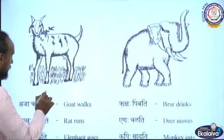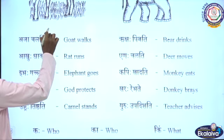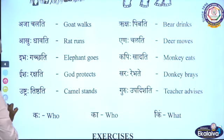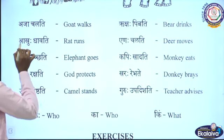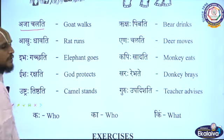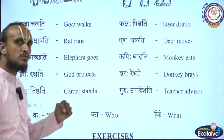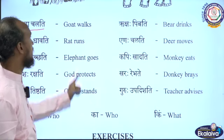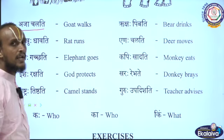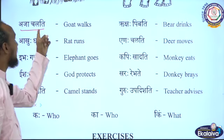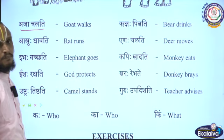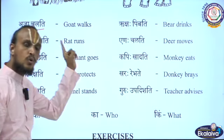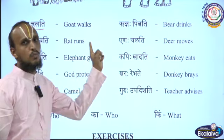The first sentence: Aja Chalati. What does Aja Chalati mean? Aja means goat, Chalati means walks. So Aja Chalati means 'Goat walks.'